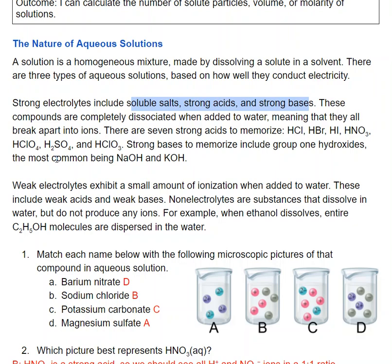Weak electrolytes exhibit a small amount of ionization in water. These are weak acids and weak bases. Non-electrolytes are substances that dissolve in water but don't produce any ions.